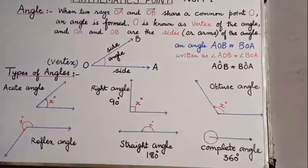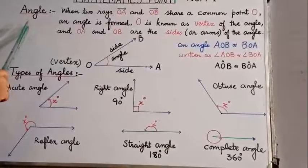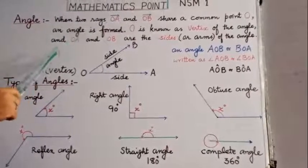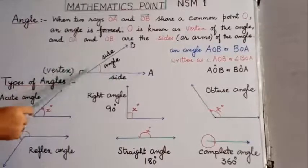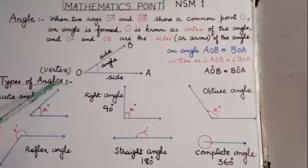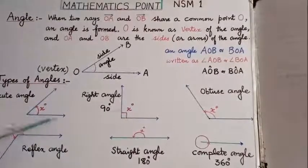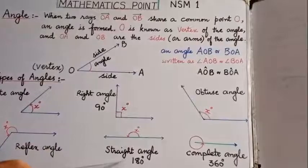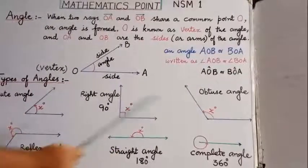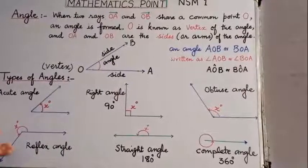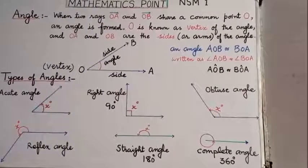So students, in this video we have learned about the definition of an angle — when two rays OA and OB share a common point O, an angle is formed. Point O is the vertex, and OA and OB are the sides. We also discussed the types of angles: acute angle, right angle, obtuse angle, reflex angle, straight angle, and complete angle. I hope you have enjoyed and learned. We will meet in the next video — if you have any questions you can ask. Take care!